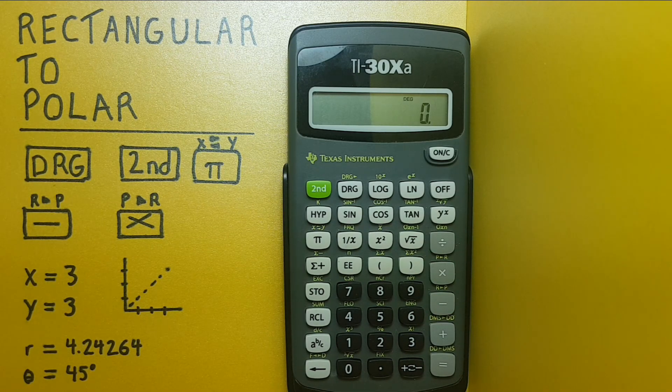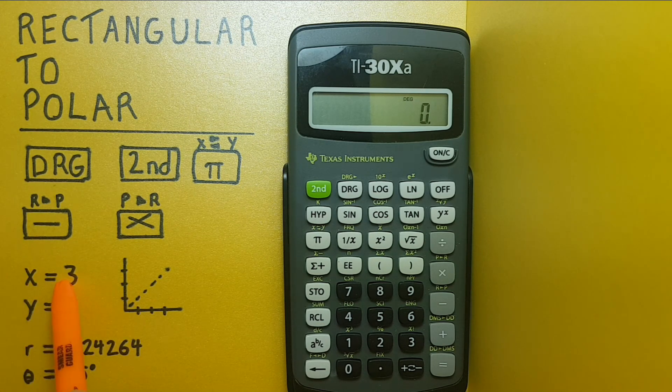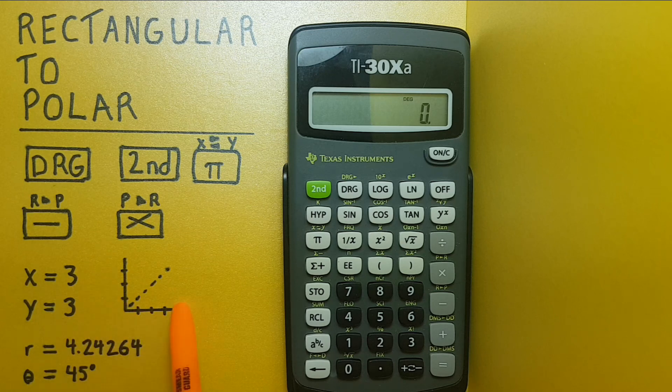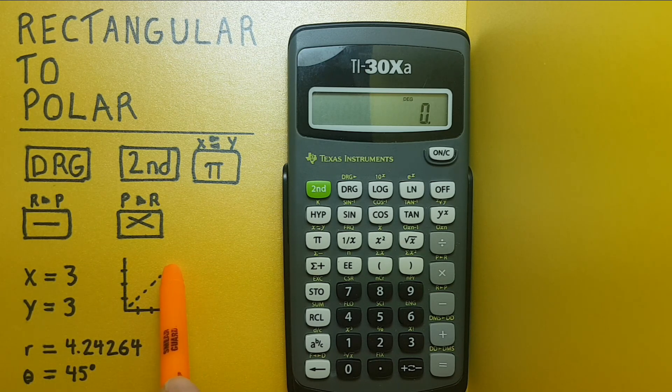All right, let's say we start out with rectangular coordinates. Let's say we have x equals 3, y equals 3, which should look something like this. Our coordinate is up here.